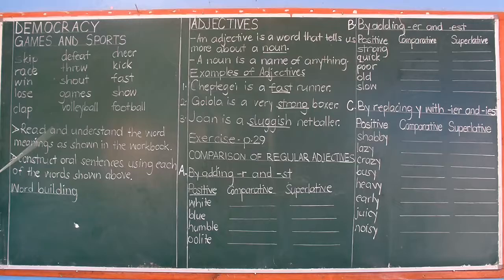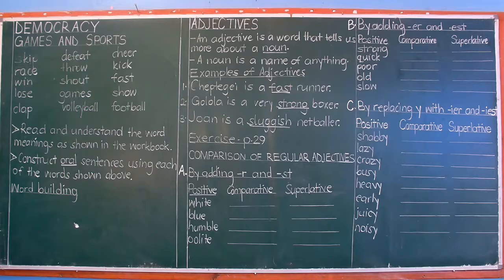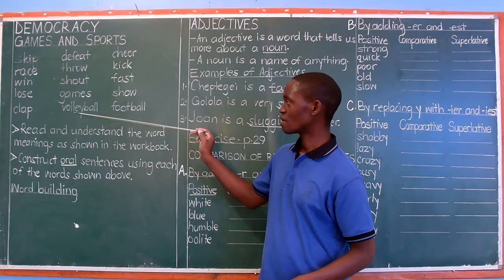After getting to understand the meanings of those different words, you are going to construct oral sentences. Oral has to do with using your mouth. You are going to use your mouth to construct sentences using each of the words shown. Take time to read and understand the meanings first, then try constructing your own personal sentence — not the example given in the workbook, but your own sentence using any of these words.